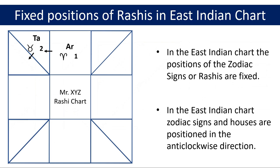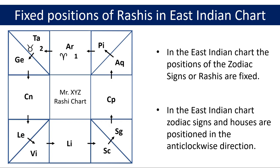Moving anticlockwise again in the direction of the arrow, the next zodiac sign Gemini or Mithuna, shown by the two-letter abbreviation GE, will be in the next triangle, next to the triangle containing Taurus or Rishabha, as shown on the screen in any East Indian chart. Likewise, following the anticlockwise direction, the remaining nine zodiac signs or Rashis in the fixed order are positioned as shown here. Take note that these signs or Rashis will always be in these positions in any East Indian chart, as positions of signs or Rashis are fixed.